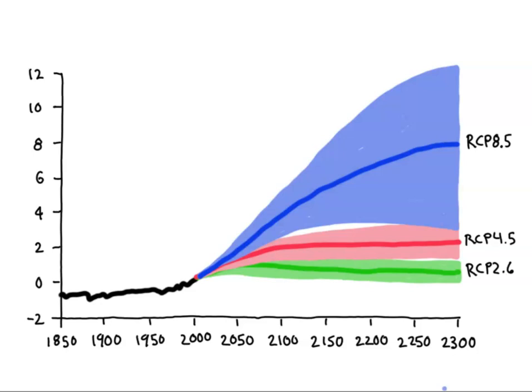But both of these projections have a range of possibilities. So in some model runs, RCP 8.5 only gives us 3.5 degrees of warming, while in others we get nearly 5 degrees of warming.